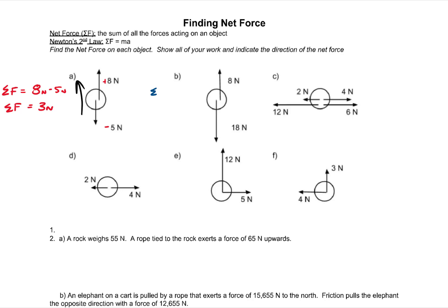For B, same deal. Net force is going to be the upward force, 8 newtons, minus the downward force, 18 newtons. So that net force is negative 10 newtons, and the net force is down.